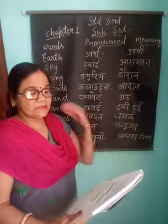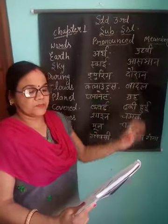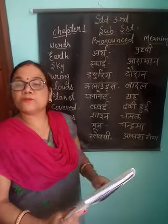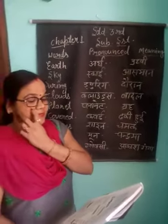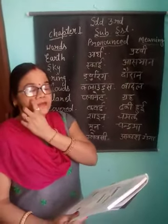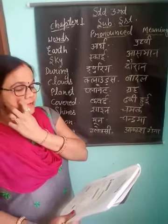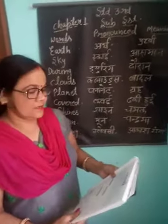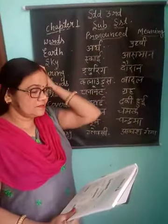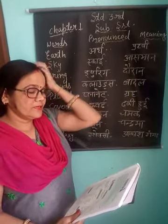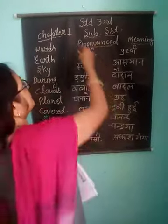The universe is a huge and endless expression having a group of millions of galaxies. The planets reflect the sun's light. Our sun is the nearest star to our planet Earth. The energy we get from the sun is called solar energy.